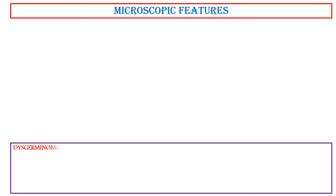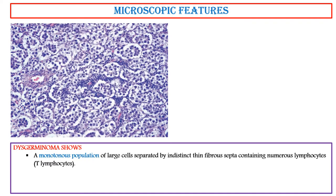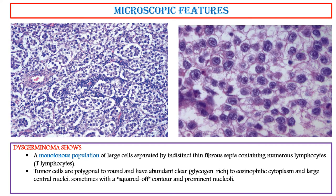Microscopic features. This germinoma shows a monotonous population of large cells separated by indistinct thin fibrous septa containing numerous T lymphocytes. Tumor cells are polygonal to round and have abundant clear glycogen-rich to eosinophilic cytoplasm, and large central nuclei, sometimes with a squared-off contour, and prominent nucleoli. Notice the distinct cell borders identifiable at high power magnification.